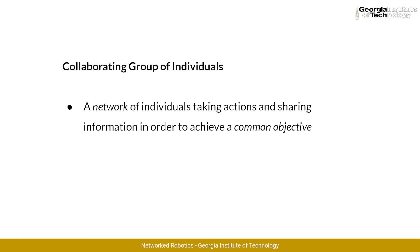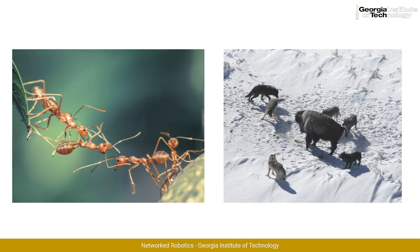Extending from our first definition, we can also introduce the idea of collaboration in a group of individuals. We say that a collaborating group is a network of individuals taking actions and sharing information in order to achieve a common objective. There are an incredible number of examples in nature where individuals of a species — and even from different species — interact with each other in order to find a nesting location, fetch food, defend from predators, and more.